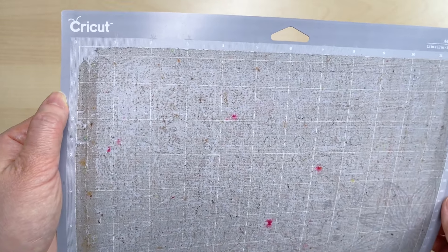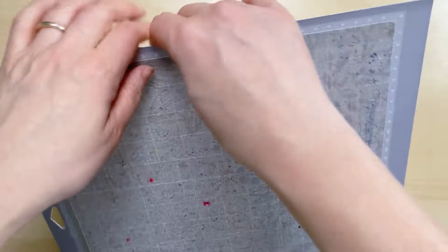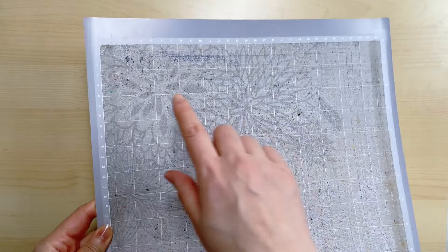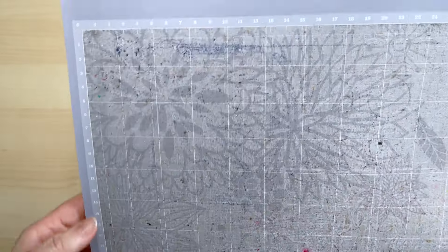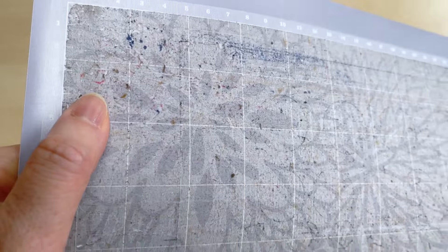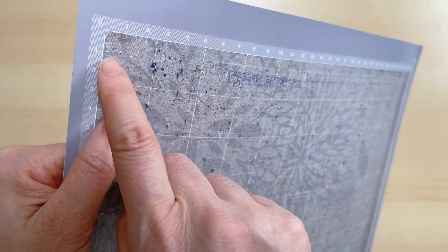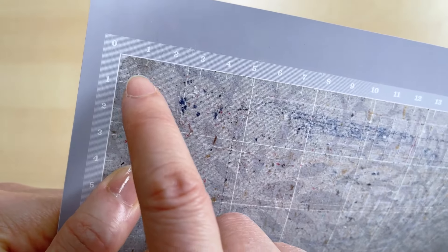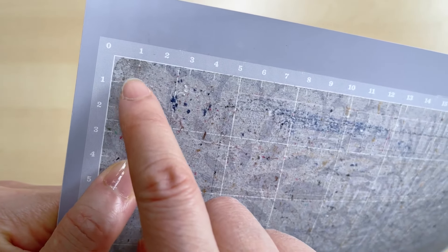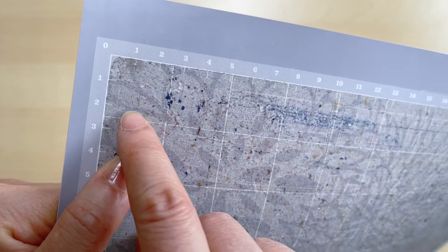So when it gets to this well loved state, I actually turn it around and use this opposite corner instead. You can see here, there's a lot more adhesive material still left in this corner. And because you can see the well worn area isn't there to indicate to me exactly where to cut.